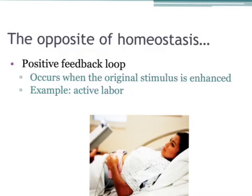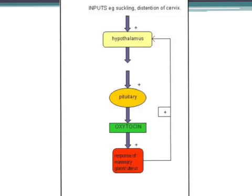You might wonder: if we can have a negative feedback loop shutting off the pathway, can we also have a positive feedback loop? We can — it's pretty much the opposite of homeostasis. It's when the original stimulus gets enhanced, gets turned up. Most of the time we wouldn't want this — you wouldn't want your body temperature to keep rising. The best example is when a woman is in active labor. Every contraction sends a message to the hypothalamus, then to the pituitary, to release more oxytocin, which causes a stronger contraction, and so on, until the baby is delivered.